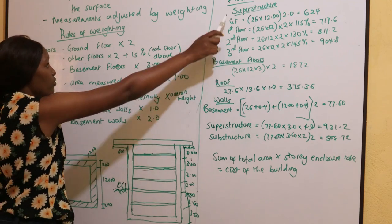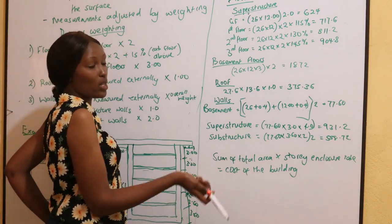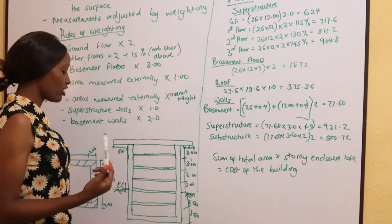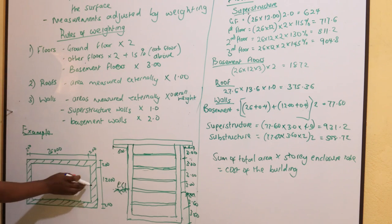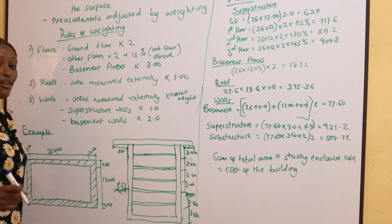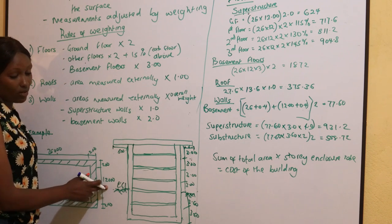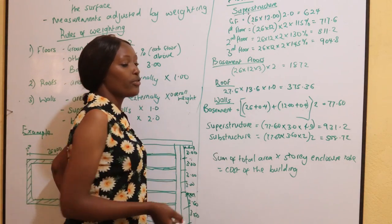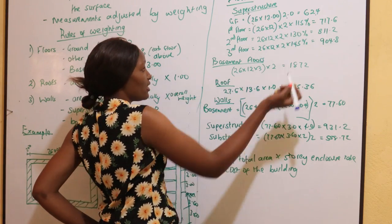When finding the cost of a building using the story enclosure method, we always start by calculating the areas of the floors. For the superstructure floors, we start with the ground floor. Remember the floors are measured internally, so we do not consider the walls. We take 26m by 12m internally. For the ground floor we multiply by a factor of 2, giving us 624 square meters.